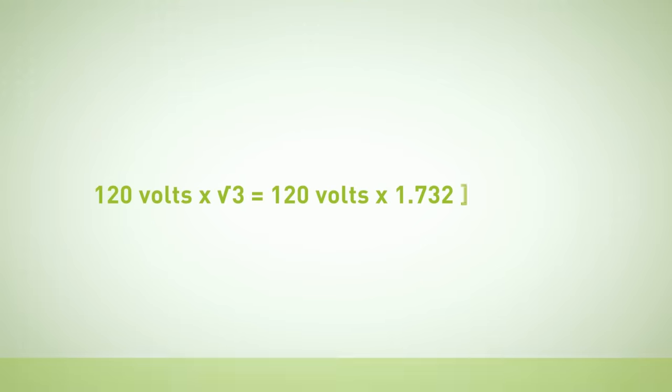So how do you calculate the power of combining two lines in a three-phase circuit? The formula is volts times the square root of 3, which happens to be rounded off to 1.732.